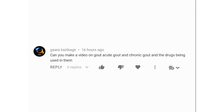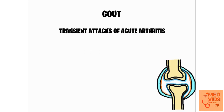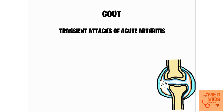This video is about gout. Gout comes under crystal-induced arthritis, so there will be deposition of crystals in the joints causing arthritis. Gout is characterized by transient attacks of acute arthritis — short-lasting episodes of acute inflammation of joints — with deposition of crystals called monosodium urate crystals within the joints, leading to damage of the cartilage and synovium and causing excruciating pain.